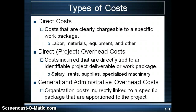Now we'll talk about some of the different types of costs within the project. There are three major types: direct costs, direct overhead costs, and general and administrative costs. Direct costs are costs that are directly charged to the project. This includes labor to perform the work, materials for the project, and equipment used to perform the project work. Materials would include anything needed to perform the work — for example, if you are building a home, all concrete, lumber, nails, electrical supplies, etc. are direct project costs.